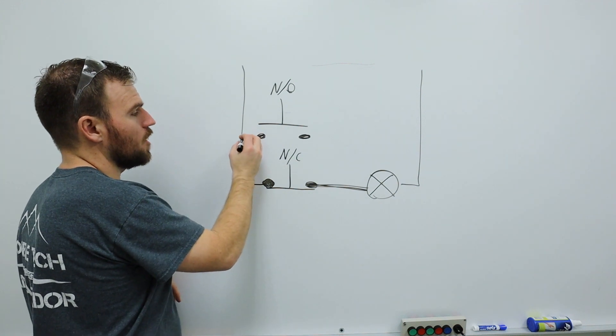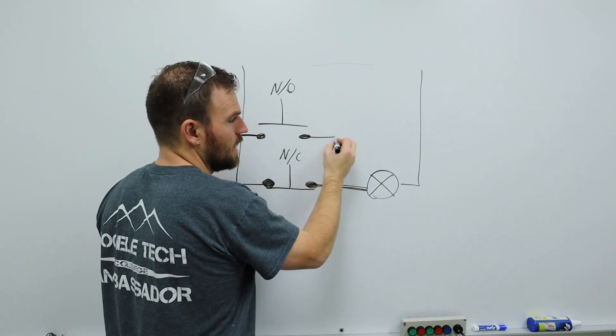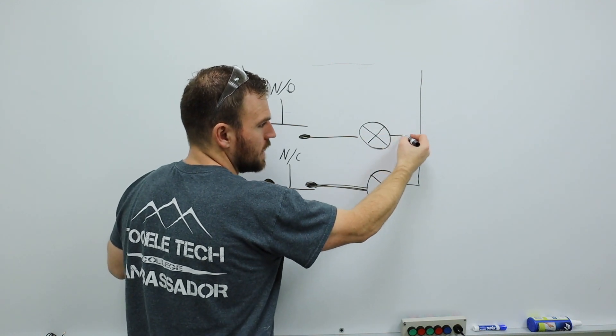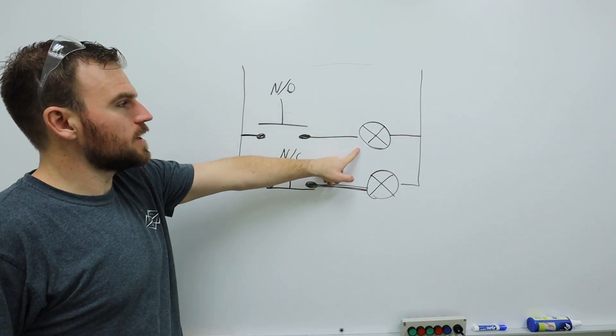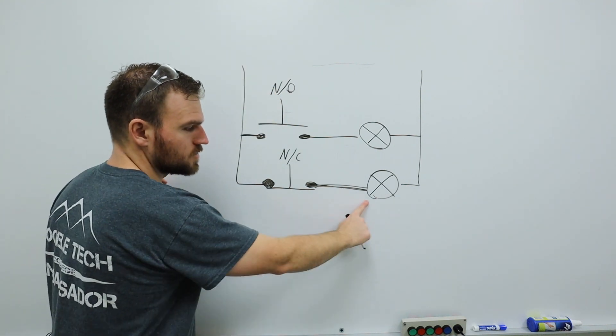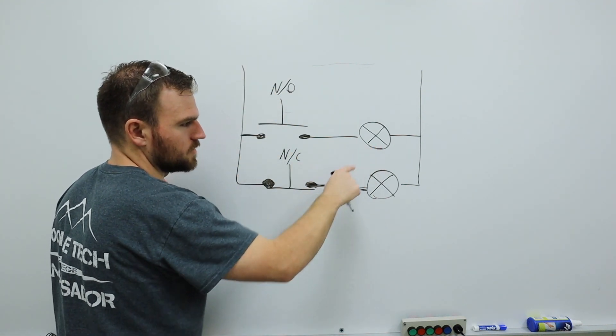Now our normally open switch up here, if we had a light just like the same set up the exact same way, it would not come on until that button was pressed. So this is a closed circuit while this one is an open circuit.